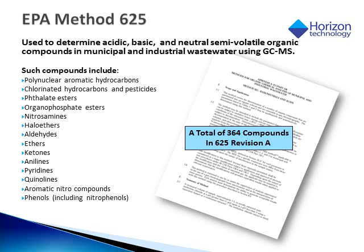EPA Method 625 is used to determine acidic, basic, and neutral semi-volatile organic compounds in municipal and industrial wastewater using GC-MS. It covers a broad range of compounds including polyaromatic hydrocarbons, phthalate esters, haloethers, ketones, quinolins, aromatic nitro compounds, and phenyls. A total of 364 compounds are listed in this particular method.